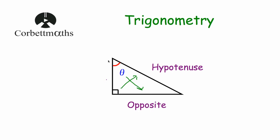And finally, the last side — the third side, the side that's left — is called the adjacent. So this left-hand side of this triangle is the adjacent, and it's adjacent to the angle, so it's beside the angle, so it's called the adjacent. So with this right-angled triangle, our three sides are the hypotenuse (the side opposite the right angle), the opposite (the side opposite the angle involved in the question), and finally the adjacent.